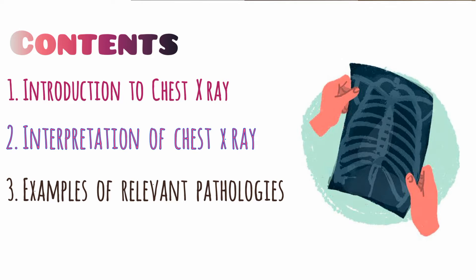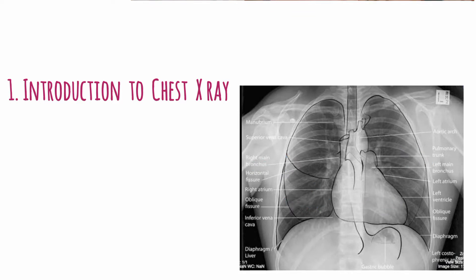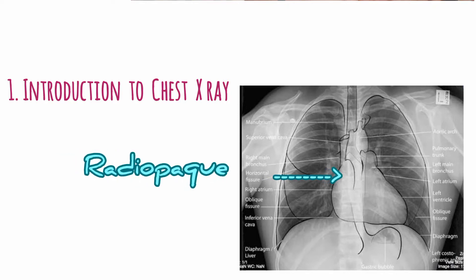Chest x-ray is an investigation that can be used to check conditions of the heart, lungs, blood vessels, or bones like rib or spine fractures. It produces a black and white image showing the organs in your chest. Structures that block radiation, like bones and the heart, appear white or radiopaque, while areas where air is present, like lungs, block very little radiation and appear darker or radiolucent.